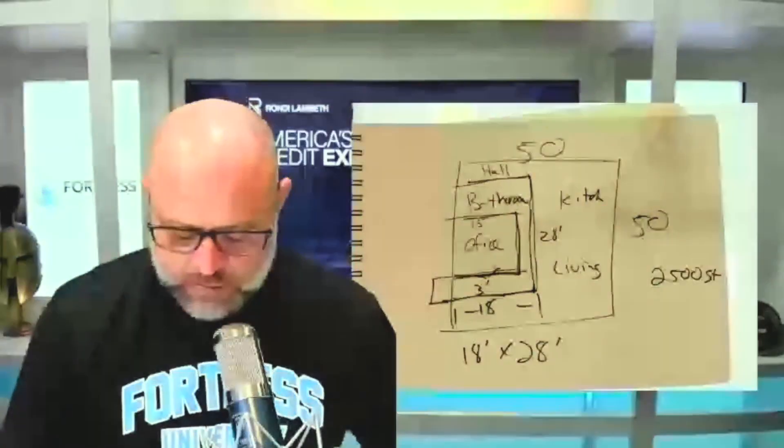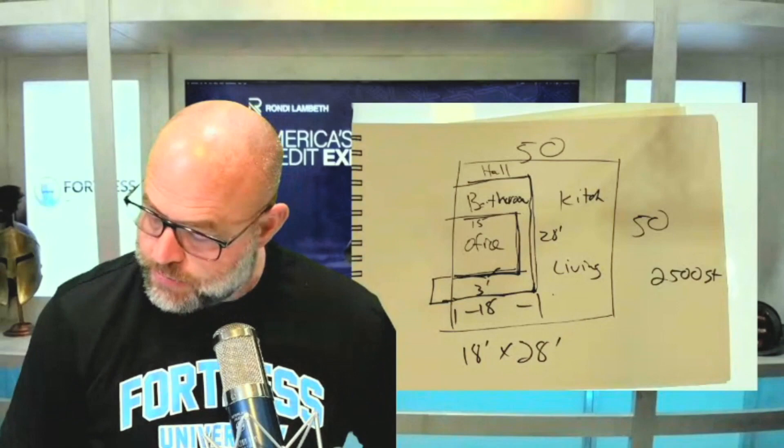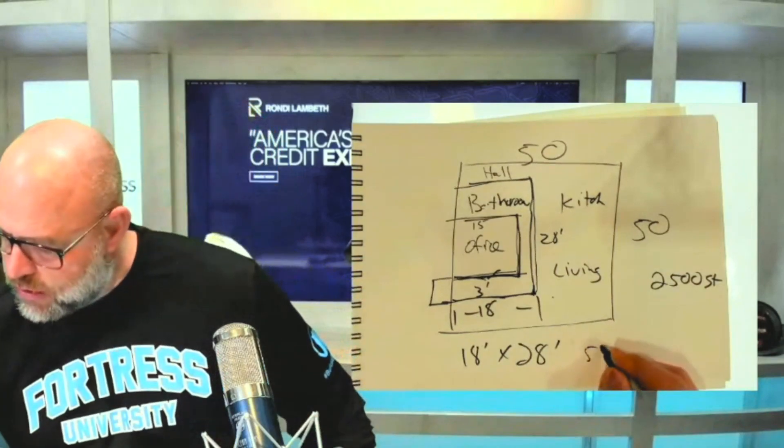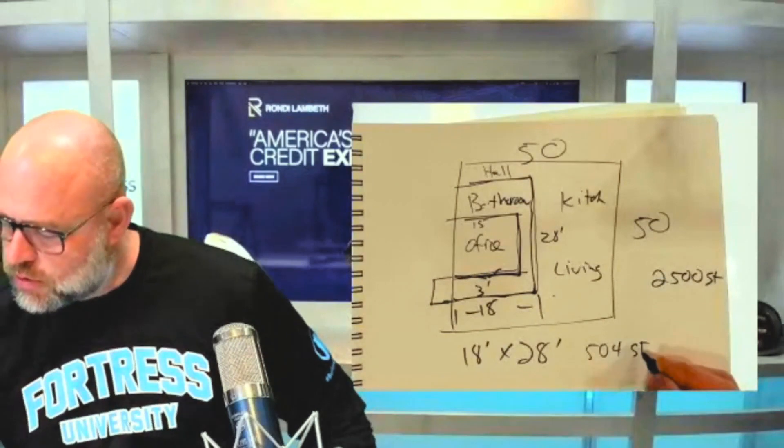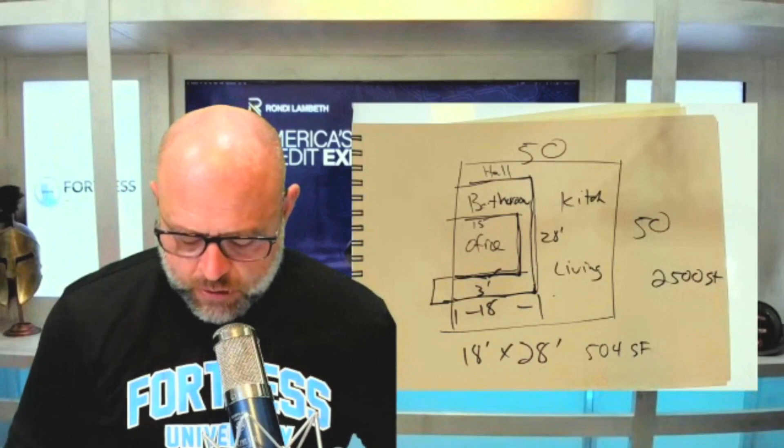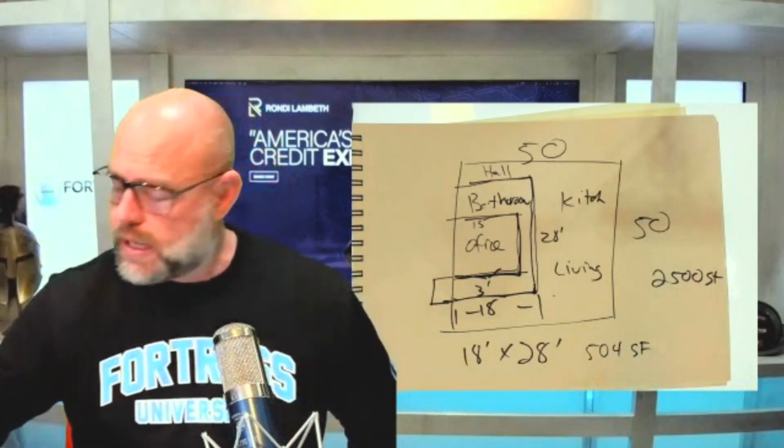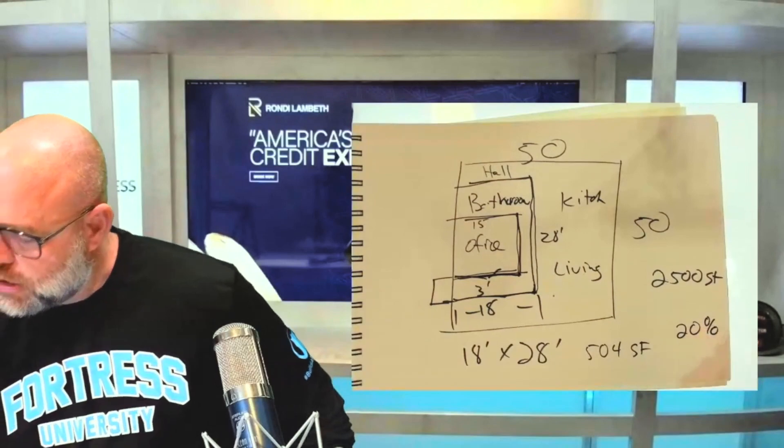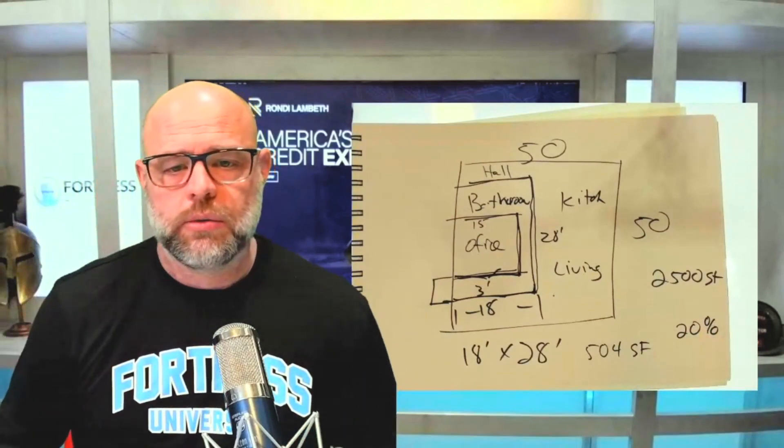So if I do 18 times 28, that's 504 square feet. Okay. Now if I divide that by 2,500 square feet, because that was the total size of the house, that's 20% of the home was being used.